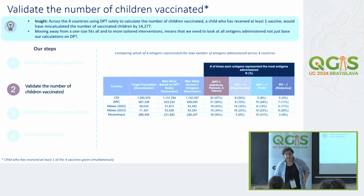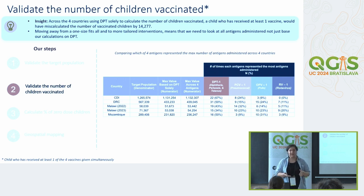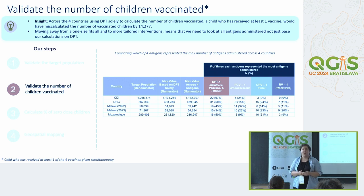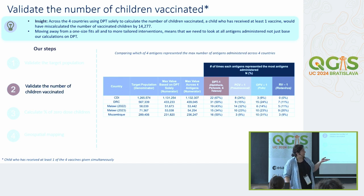The next step was to validate the actual number of children who had been vaccinated. The standard approach to identify zero-dose children is to calculate off the DPT vaccine—diphtheria, pertussis, and tetanus. If a child has been vaccinated for that, they're not considered zero-dose; if they haven't, they are. The problem, however, is that stockouts are a common occurrence, and so many children were being calculated as zero-dose when they actually weren't.